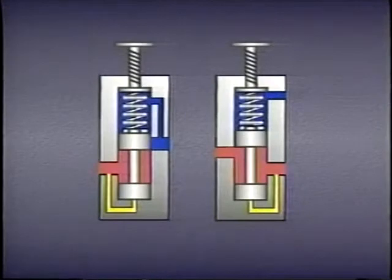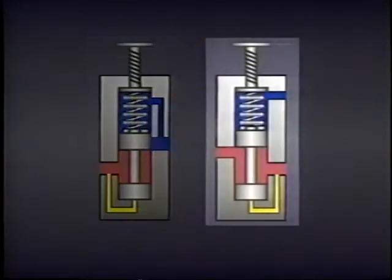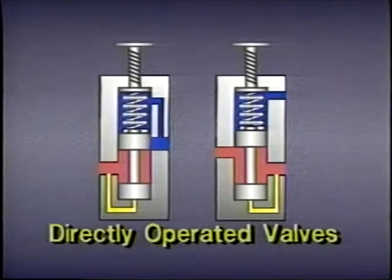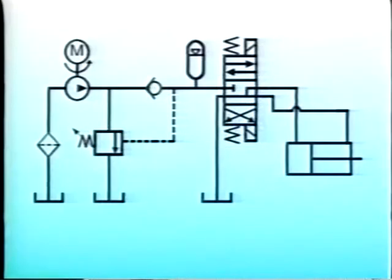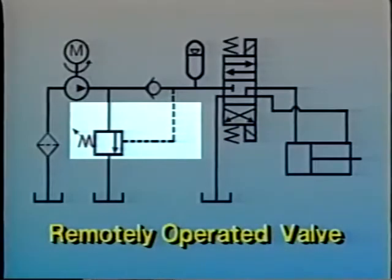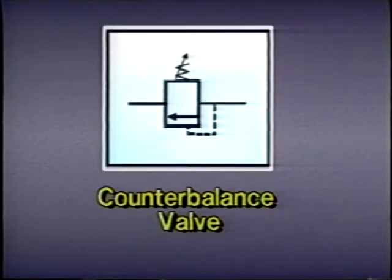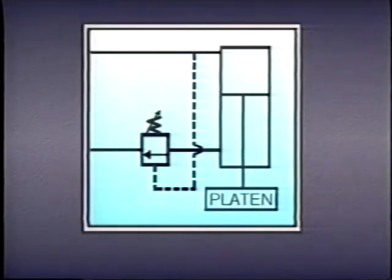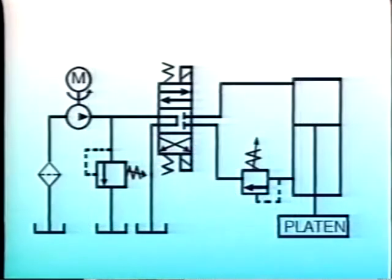Pressure control valves can sense pressure internally through a passage within the valve body — either from the primary passage like a relief valve, or from the secondary passage like a pressure reducing valve. This is referred to as direct sensing or direct operation. Pressure can also be sensed in some other part of the system by means of an external line, called remote sensing or remote operation. Counterbalance valves are sometimes remotely operated — for example, in a hydraulic press circuit, a pilot line senses pressure upstream of the cylinder, allowing us to maximize the force applied as the platen presses through the workpiece.